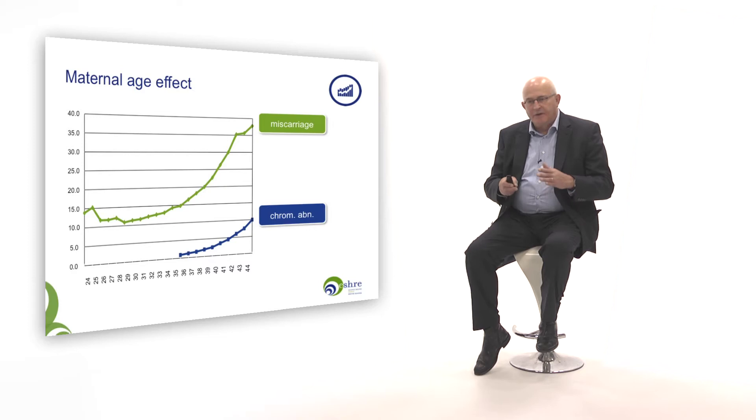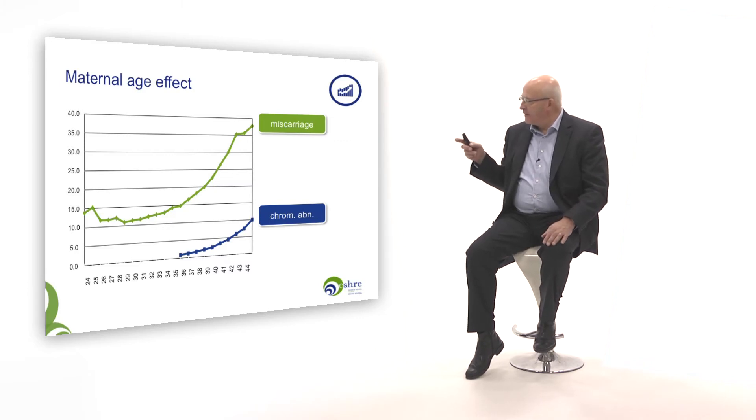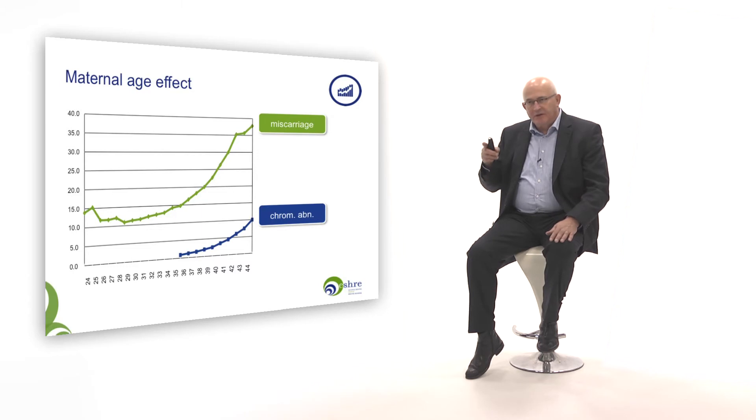Down syndrome is a rather frequently occurring abnormality, and it is associated with increased maternal age. As we can see in this slide, as the age of the woman increases, the chance of having chromosome abnormalities increases as well. After the age of 35 to 36, the number of chromosome abnormalities goes up quite rapidly, and so does the number of miscarriages — spontaneous abortions. This is due to the fact that during formation of the maternal gamete, the oocyte, the division of the chromosomes goes wrong.